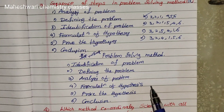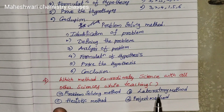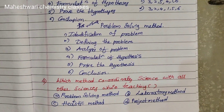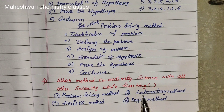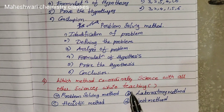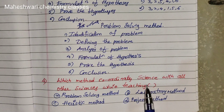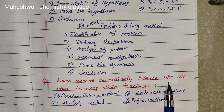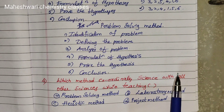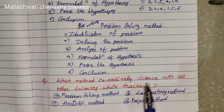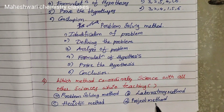Fourth question: Which method coordinates science with all other sciences while teaching? Options are Problem solving method, Laboratory method, Heuristic method, Project method. The answer is Project method, option D, because the project method is the unitable method that connects all parts of science.